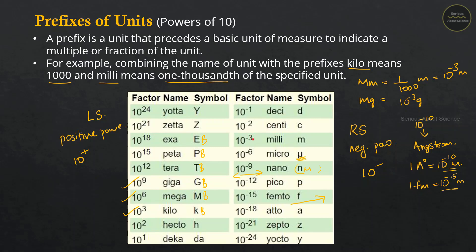To put this in perspective using a size comparison: if the nucleus were at the center of a football stadium, the entire stadium would represent the atom. The nucleus is 10 raised to 5 times smaller than the size of the atom, meaning most of the space inside an atom is empty.